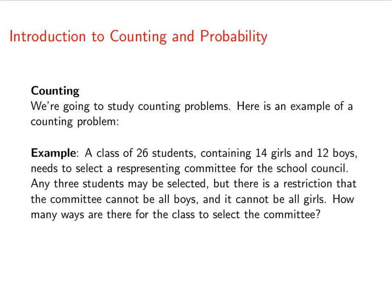Let's say you have a class of 26 students. There's 14 girls and 12 boys. And this class needs to select a committee for the school council. We're going to select three students to be on the committee, but there's a restriction that says that we can't have all boys or all girls. How many ways are there for the class to select the committee?